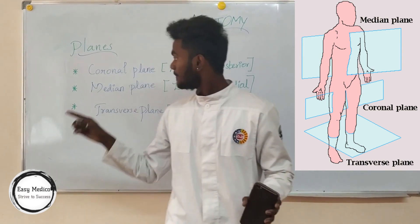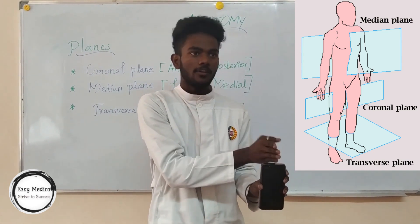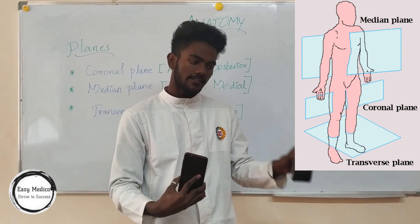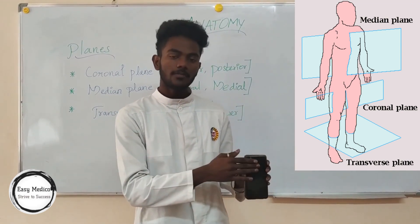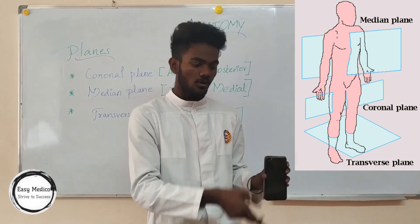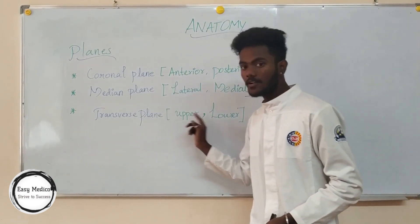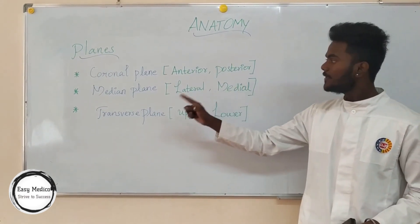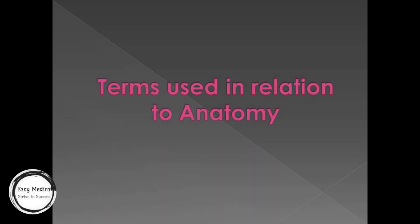Next, the transverse plane — this divides the body into two parts: the upper part and the lower part. So to summarize: the coronal plane gives anterior and posterior; the median plane gives lateral and medial; and the transverse plane gives upper and lower — that is, three planes giving us three pairs of divisions.